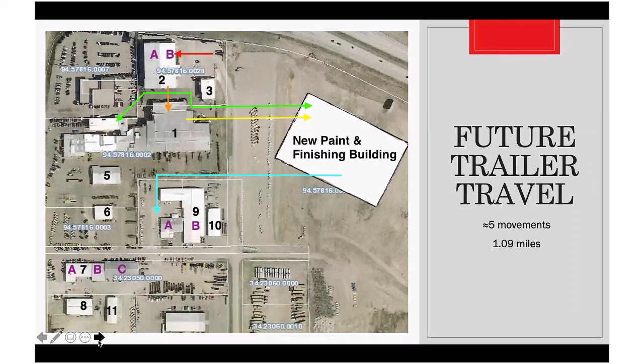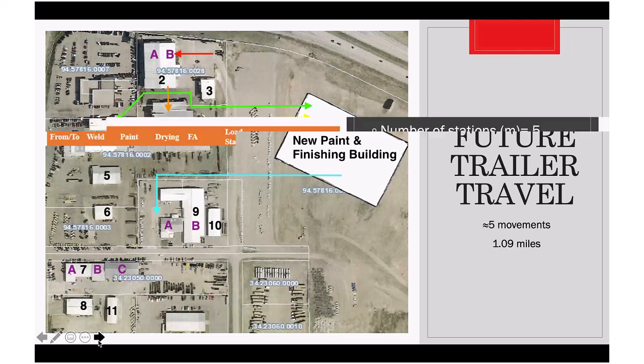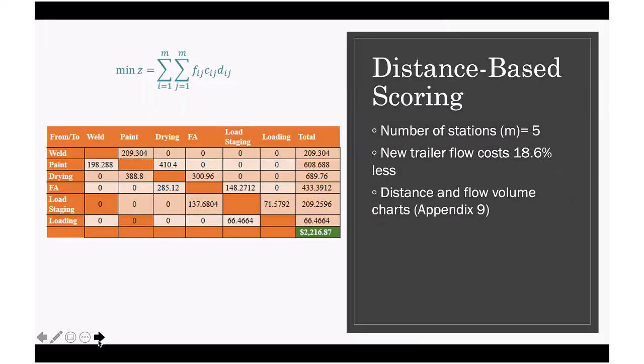If we look at the future planning setup for trailer travel between departments, the trailer will travel a total distance of 1.10 miles, moving for five movements starting from the welding shop. The cost of this setup will be 18.6% less than the old one on a daily basis. The charts used to reach this estimation can be viewed in Appendix 9.